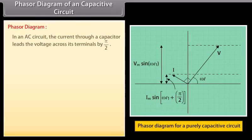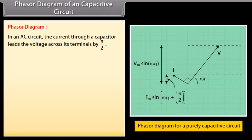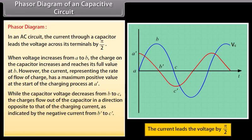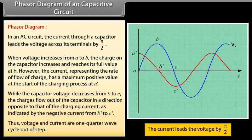Phasor diagram of a capacitative circuit: in an AC circuit, the current through a capacitor leads the voltage across its terminals by π/2. When voltage increases from A to B, the charge on the capacitor increases and reaches its full value at B; however, the current has a maximum positive value at the start of the charging process at A. While the capacitor voltage decreases from B to C, voltage and current are one quarter wave cycle out of step.